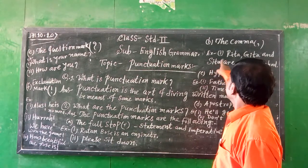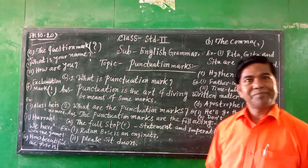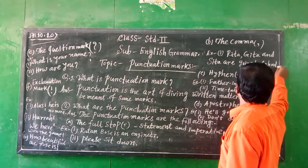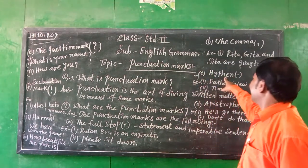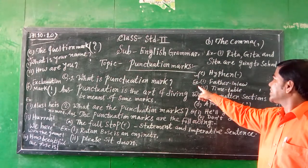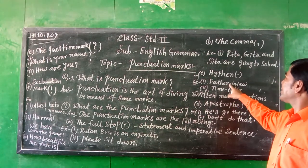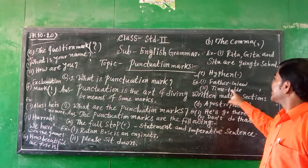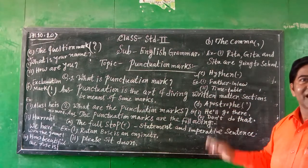You know, naming words should always begin with capital letters, and at the end of the sentence use a full stop. Number three: hyphen. For example, father-in-law. Time-table.